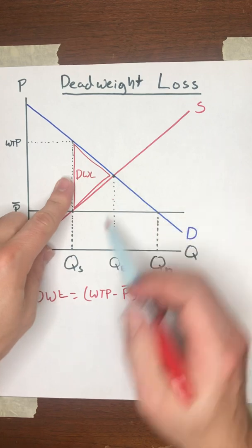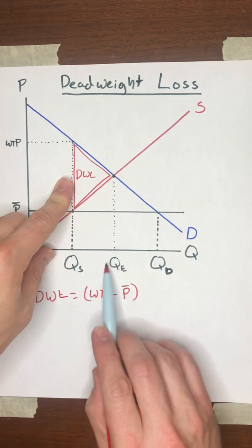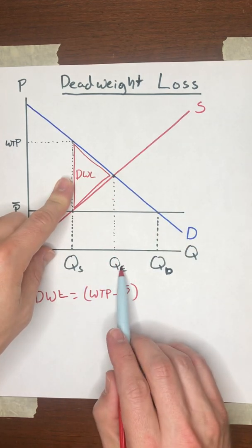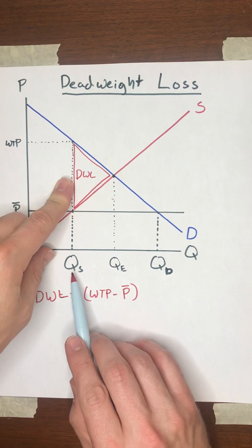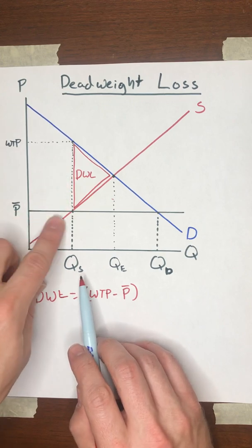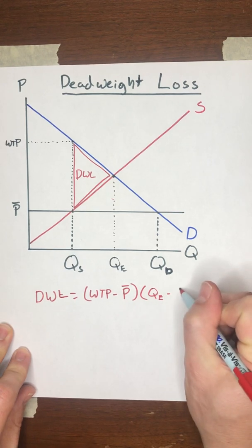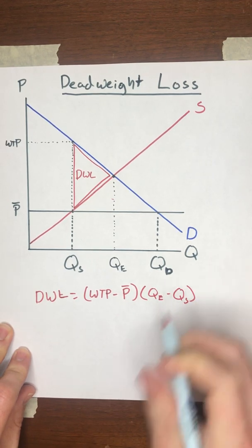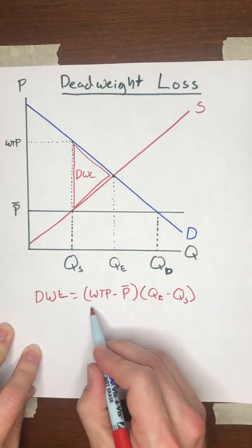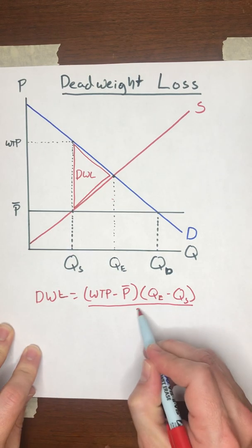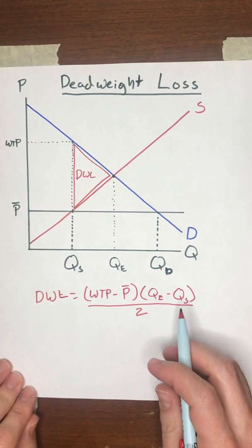And then the length of this triangle will be the difference between the number of units that would trade in equilibrium and the number of units that are actually trading as a result of the price cap. So that gives us QE minus QS. And then divide this product by 2 because we're calculating the area of a triangle.